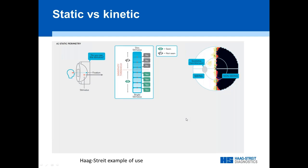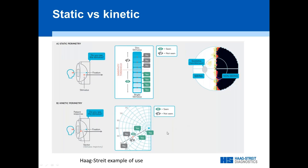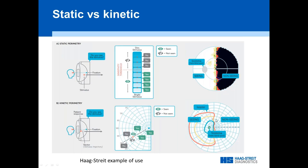Kinetic perimetry gets a very similar result but in a different way. Instead of changing the brightness, it changes the location while keeping the brightness fixed. Because we see dimmer stimuli in the center than outside, we are able to draw isopters — like altitude lines on a physical map — showing us where there's no vision and where there's fairly normal vision.